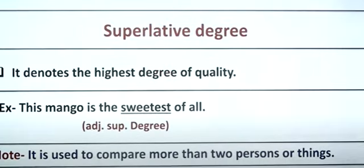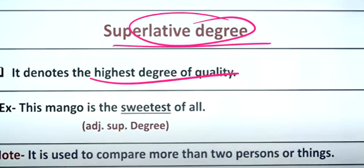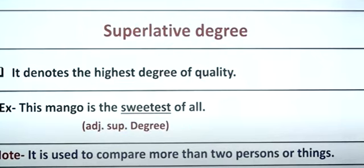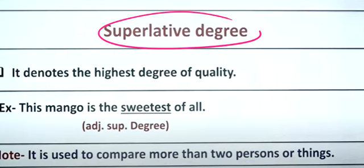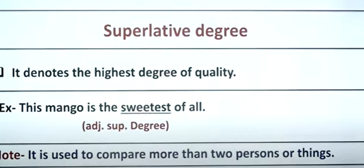The superlative degree is used when comparing more than two things. For example, 'this mango is the sweetest of all.' Here, the mango is being compared to all others, so we use the superlative degree.